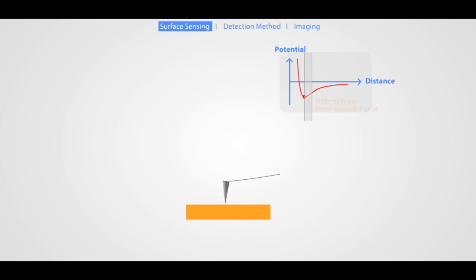As the tip approaches the surface, the close-range attractive forces between the surface and the tip cause the cantilever to bend towards the surface. However, as the cantilever is brought even closer to the surface, increasingly repulsive forces cause the cantilever to bend away from the surface.